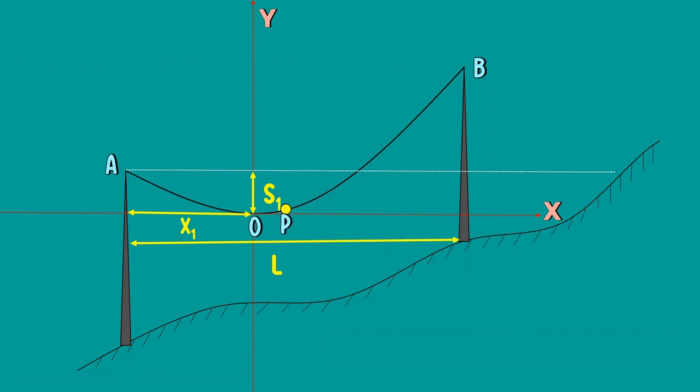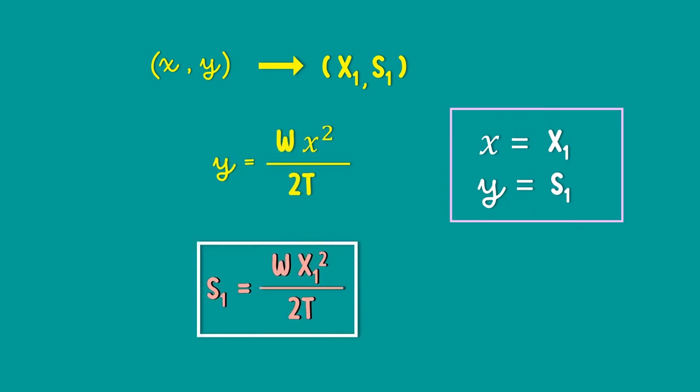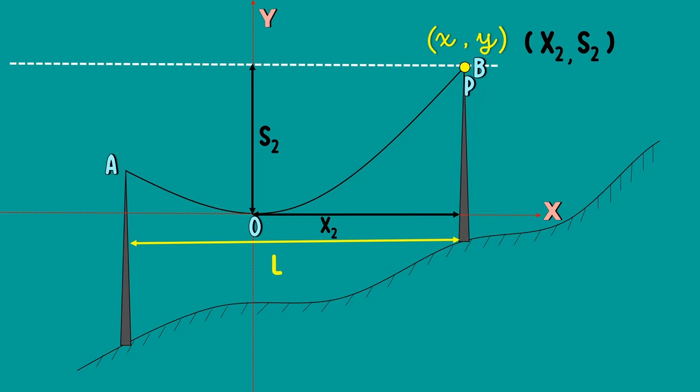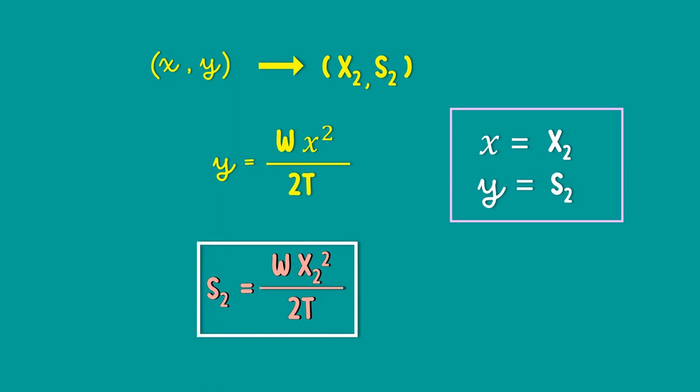If we consider our point P to be at point A, then the X and Y coordinates will be X1 and S1. If we substitute it in our previous equation, we will get our sag S1. Similarly, if we consider our point P to be at point B, then X and Y coordinates will be X2 and S2. If we substitute these coordinates in our equation, we will get sag S2.